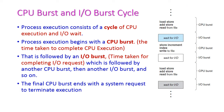CPU burst and IO burst cycle: the process execution is a cycle of CPU execution as well as IO wait. Process execution begins with a CPU burst. The CPU burst is the time taken to complete CPU execution. This is followed by an IO burst — the time taken to complete the IO request is called the IO burst — which is again followed by another CPU burst and another IO burst, and so on.